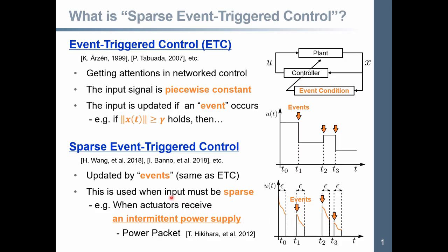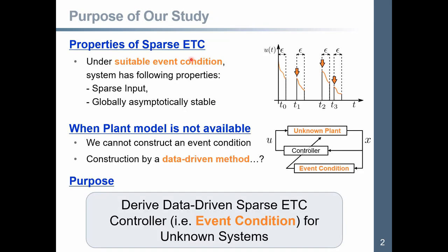This is due to the fact that the system has the following property: input must be sparse. For example, when actuators or plant receives an intermittent power supply. Note that such intermittent power supply has been proposed as, for example, power packet. In this method, under suitable event condition, system has the following properties: sparse input and globally asymptotically stable.